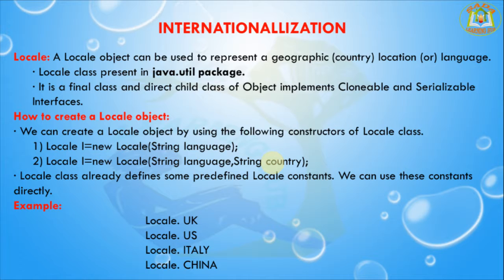The Locale class is present in the java.util package and it is a final class and a direct child class of Object. It implements the Cloneable and Serializable interfaces. Next I am going to discuss how to create a Locale object. We can create a Locale object by using the following constructors in the Locale class: one is a parameterized constructor that takes a String argument, and the second is a parameterized constructor that takes two arguments.